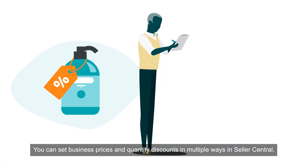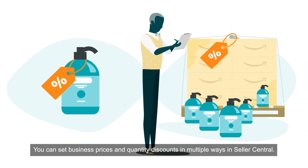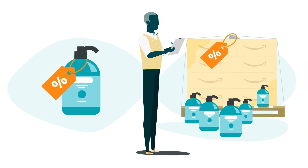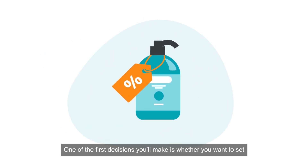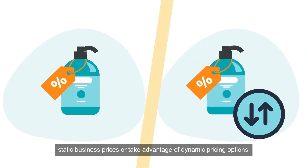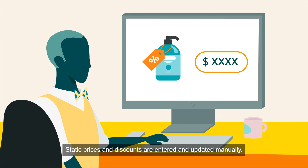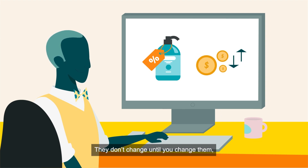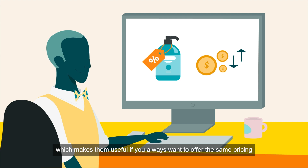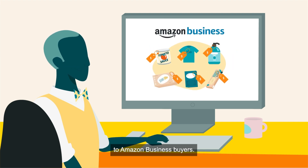You can set business prices and quantity discounts in multiple ways in Seller Central. One of the first decisions you'll make is whether you want to set static business prices or take advantage of dynamic pricing options. Static prices and discounts are entered and updated manually. They don't change until you change them, which makes them useful if you always want to offer the same pricing to Amazon business buyers.